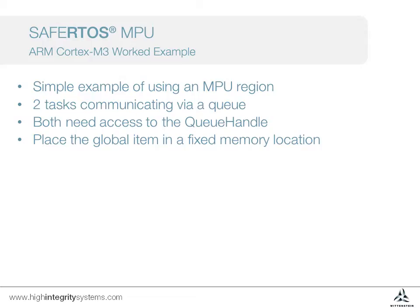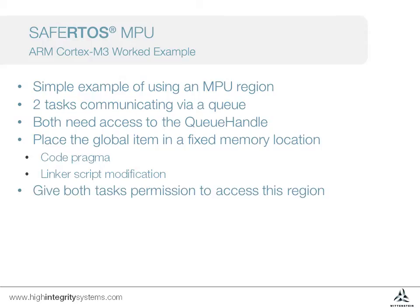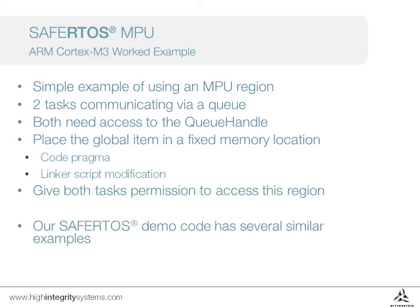This is usually done by a combination of operations, both of which are compiler specific. Firstly we need a code pragma to indicate that the variables should be placed in a specific region. The other step is to modify the linker script to create this region. We then need to give both tasks permission to access it. The SafeARTOS demo code uses this approach in several places.